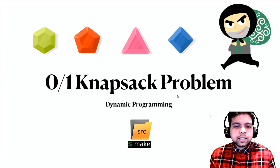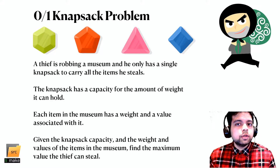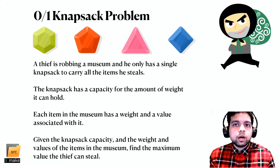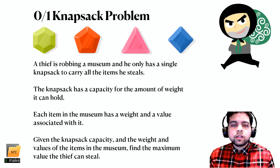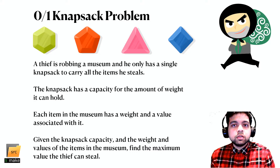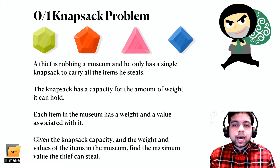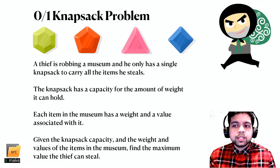The classic 0-1 knapsack problem is this: a thief is robbing a museum and he only has a single knapsack to carry all the items he steals. The knapsack has a certain capacity for the amount of weight it can hold, and each item in the museum has a certain weight and a value associated with it. Given the knapsack capacity and the weights and values for each item, find the maximum value the thief can steal.